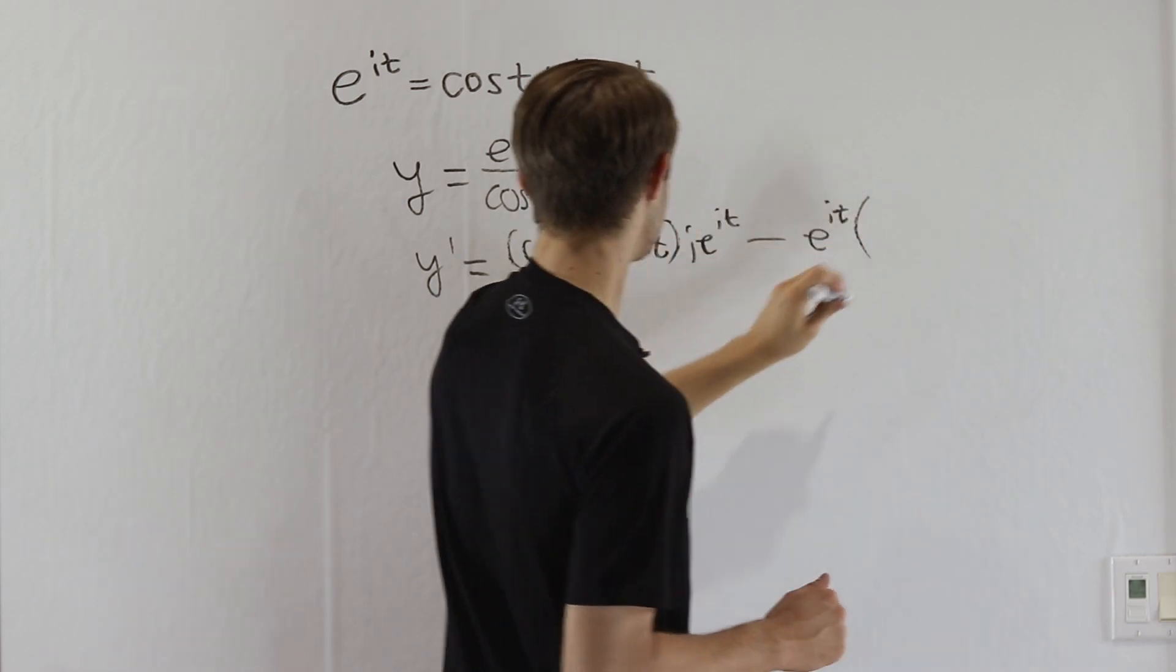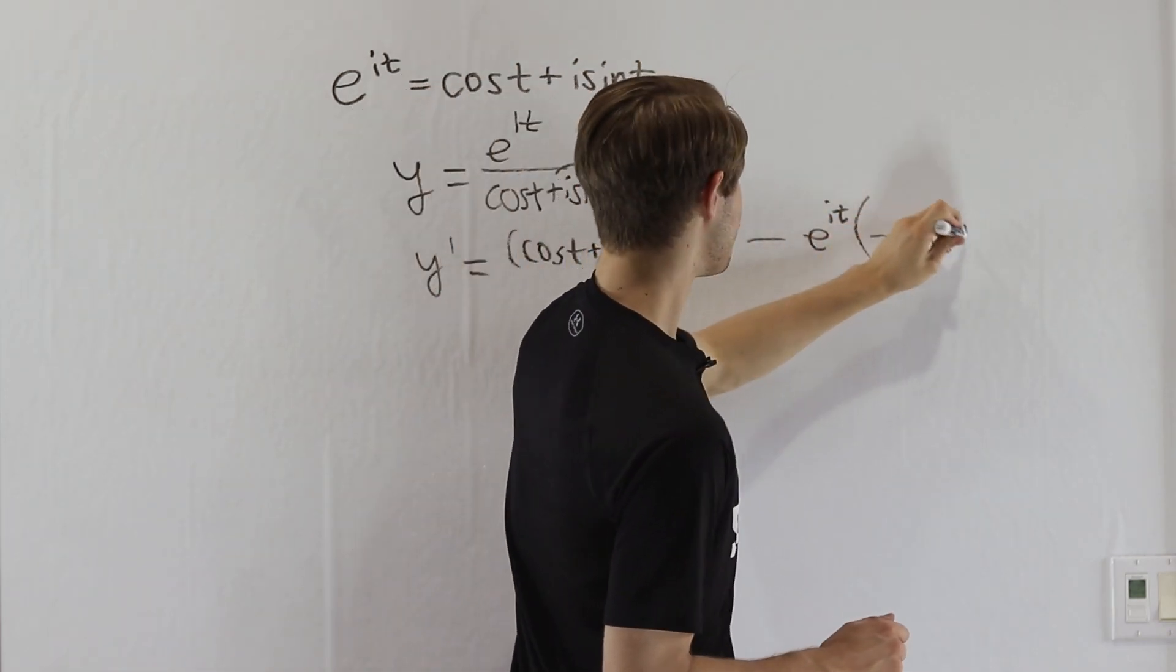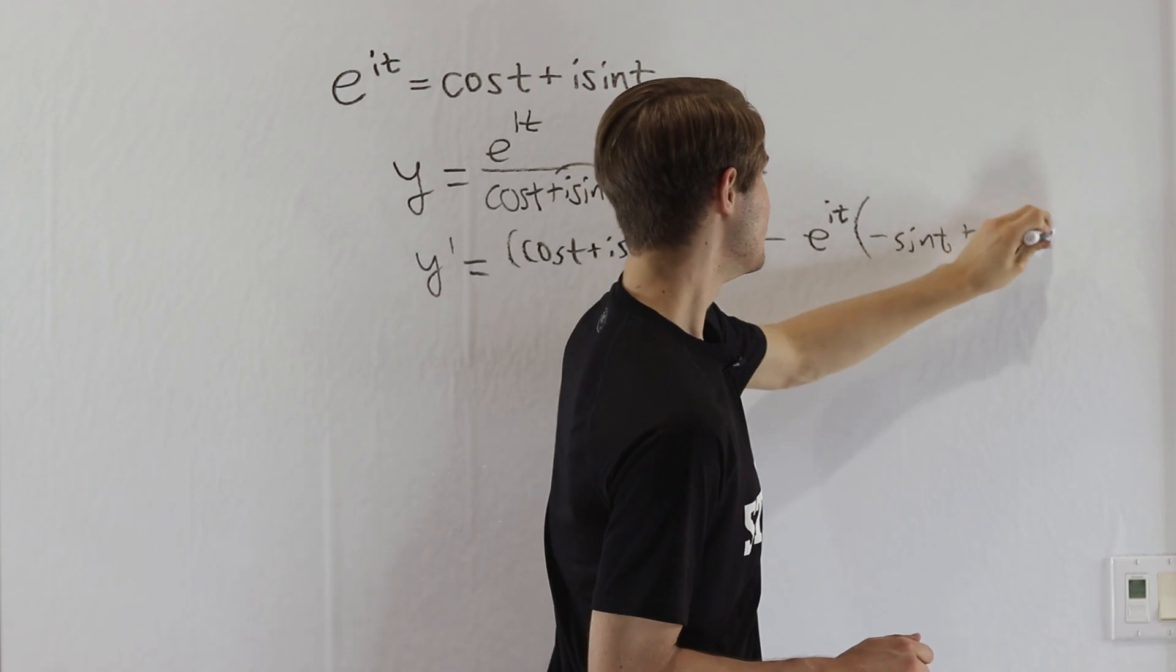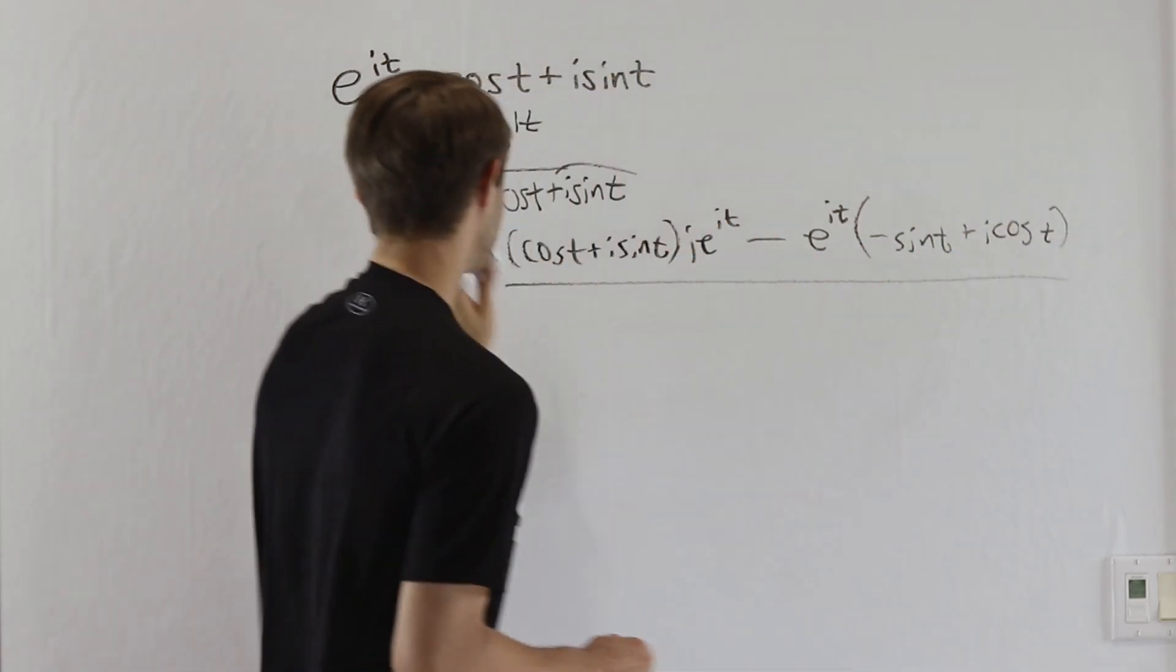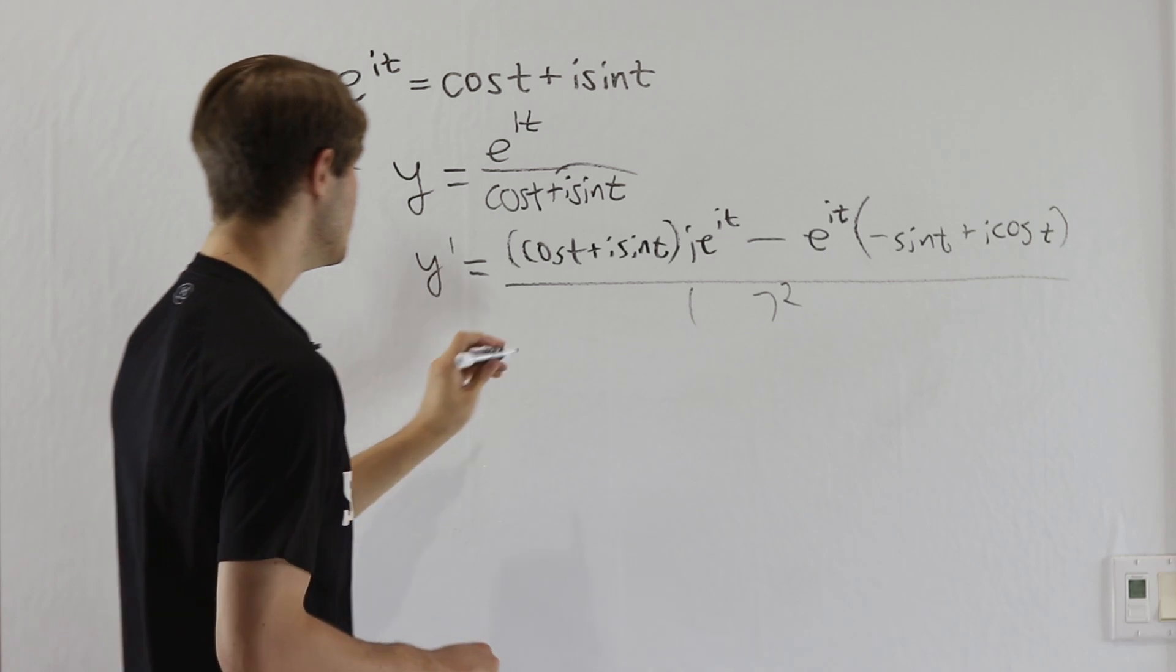The top is e to the it, the derivative of the bottom, negative sine t plus i cosine t, and then we divide by the denominator squared. We don't really care about the denominator. Let's just look at the numerator.